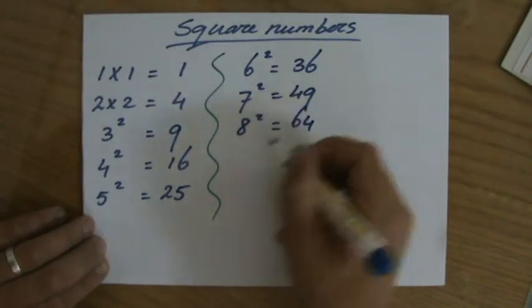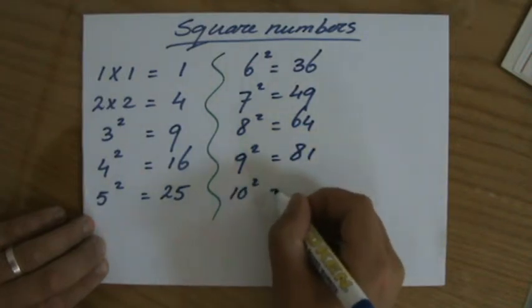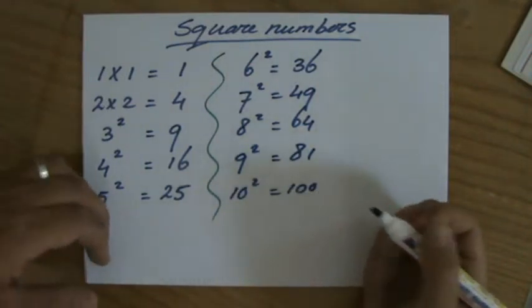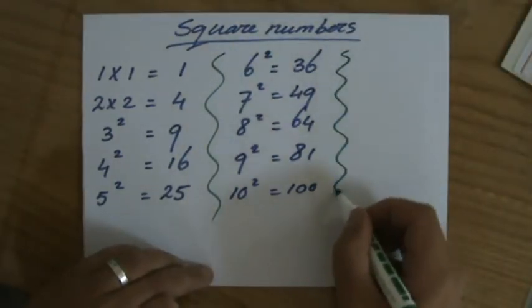9 squared equals 81, and 10 squared equals 100. All right, perhaps you already knew these, that's fantastic.